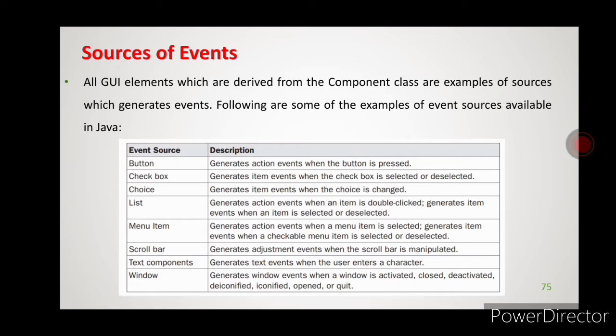The first event source is a button, which will generate an action event. For example, when you log into Gmail, you enter a username and password and click the login button — at that time a login action takes place. Similarly, when filling a registration form and clicking the register button, the registration action happens and it stores all your information.